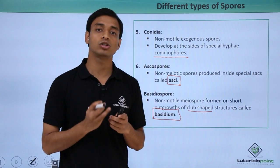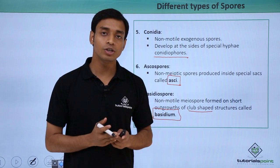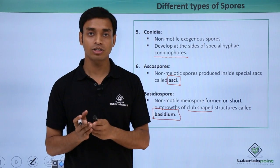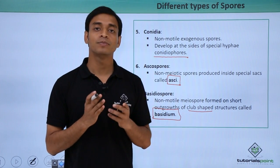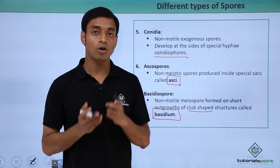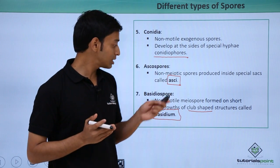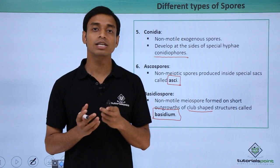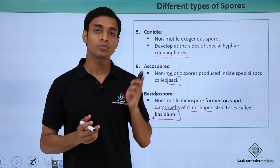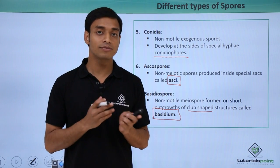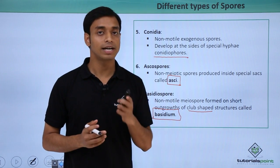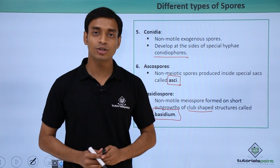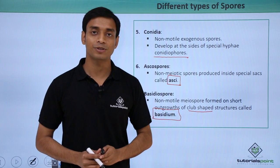In this video we have talked about the asexual mode of reproduction, which happens by the formation of spores. We have also talked about the seven different categories of spores mostly used by the kingdom Fungi in order to reproduce asexually. I hope you have understood and liked this video. Thank you.